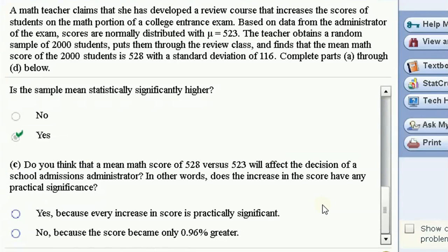So, although we can be statistically confident, or there is statistically significant evidence that this teacher's review course does improve math scores, raising the mean from 523 to 528 probably is not very important.